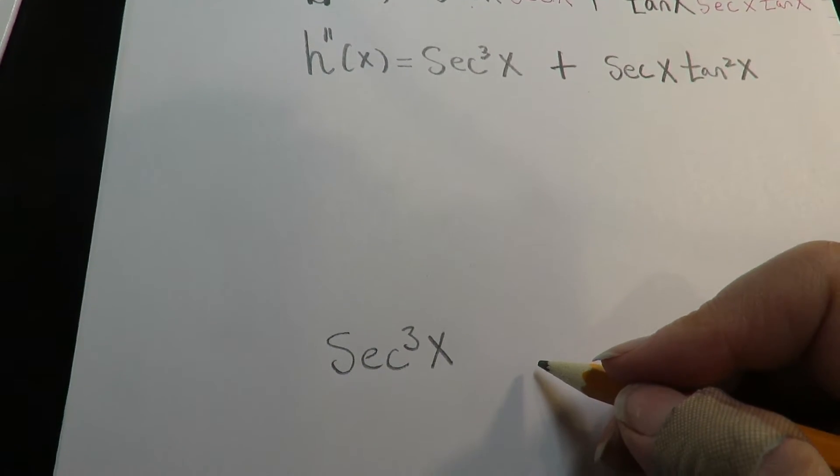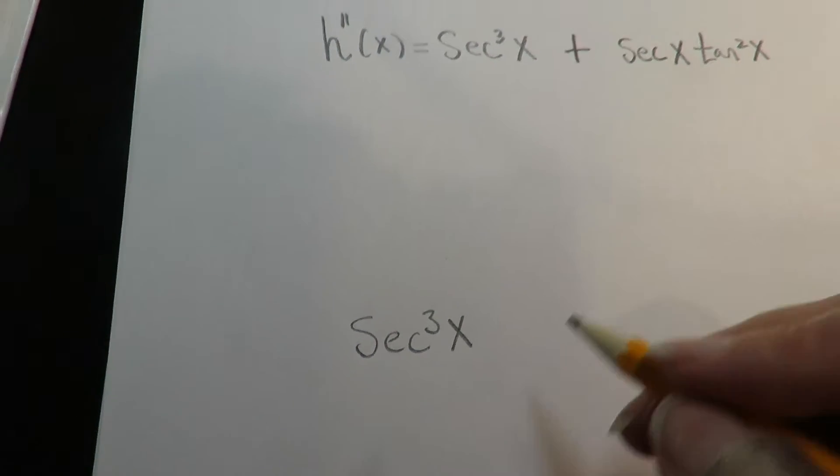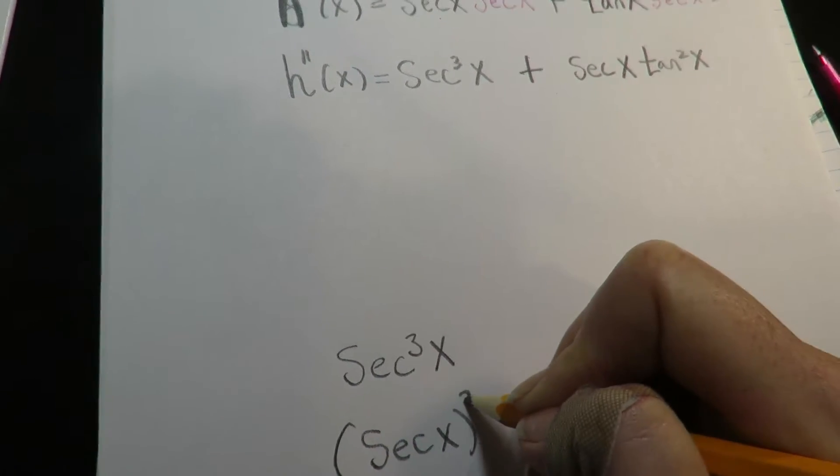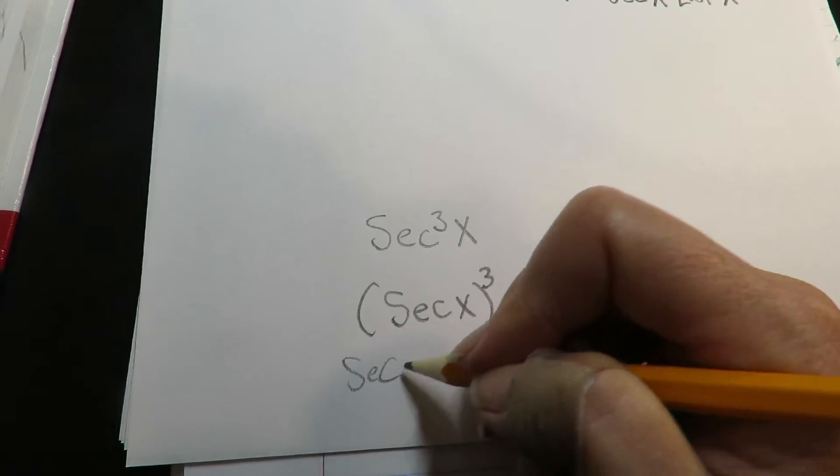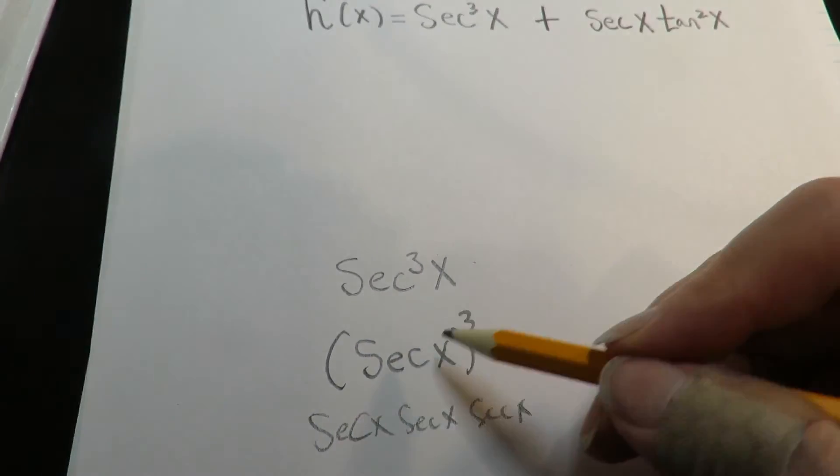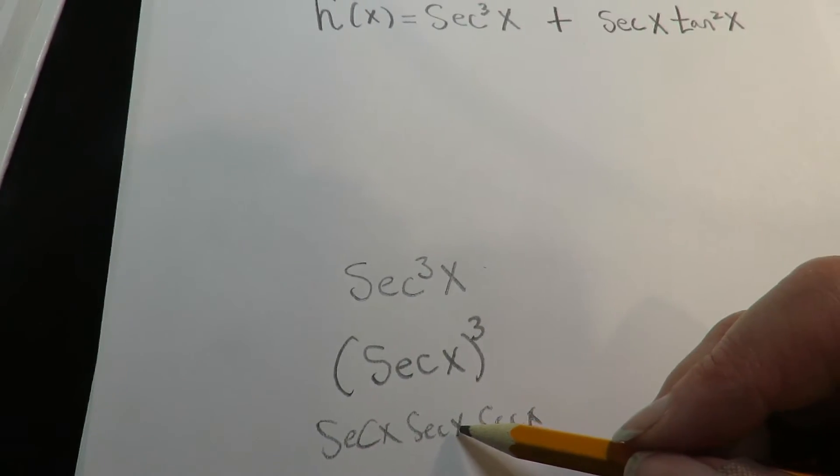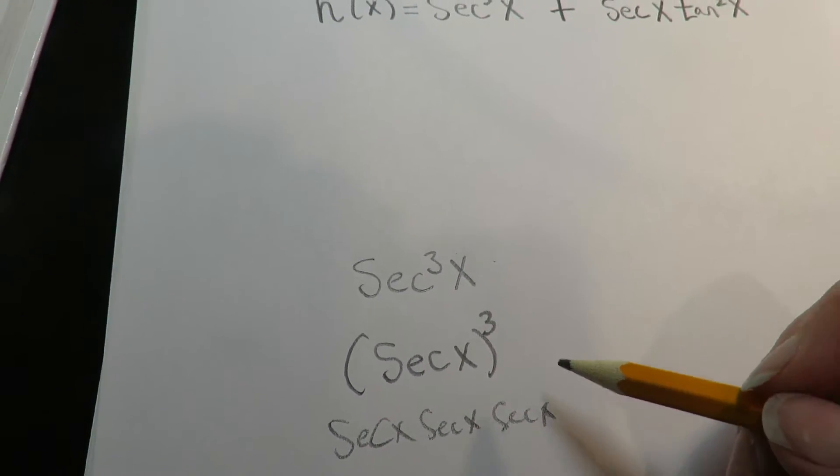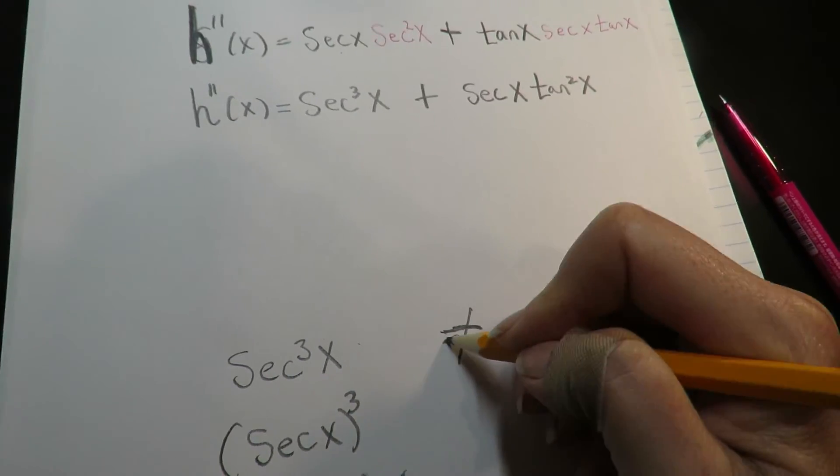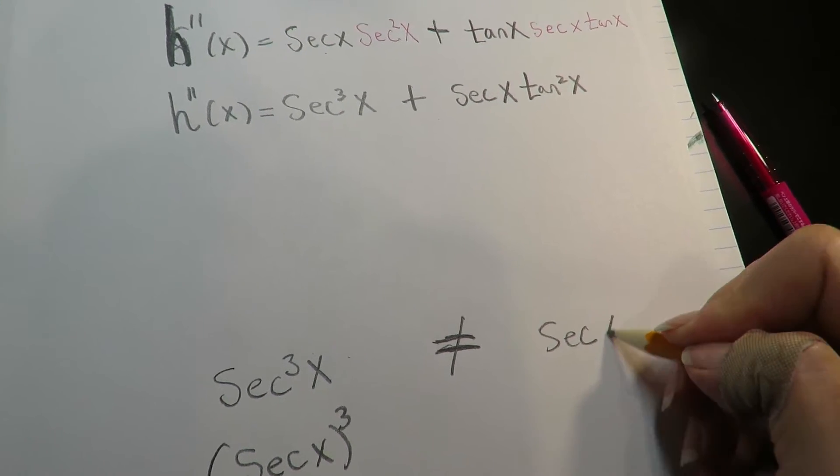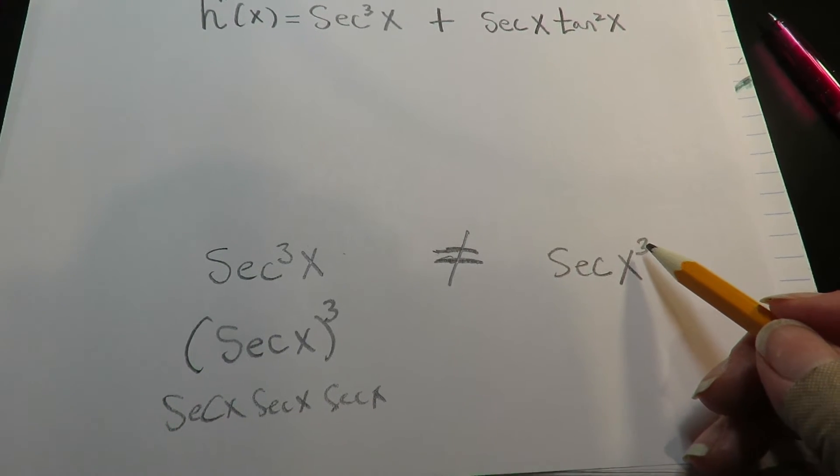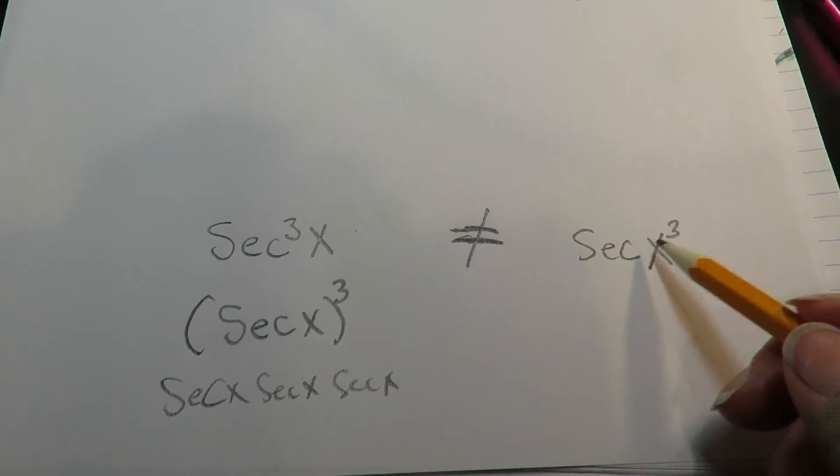Secant cubed of x means that you have three secants: secant x, secant x, secant x. Secant cubed x means that you have three of those trig functions, which is not equal to—you've got to really watch, math is real particular—you do not say this.